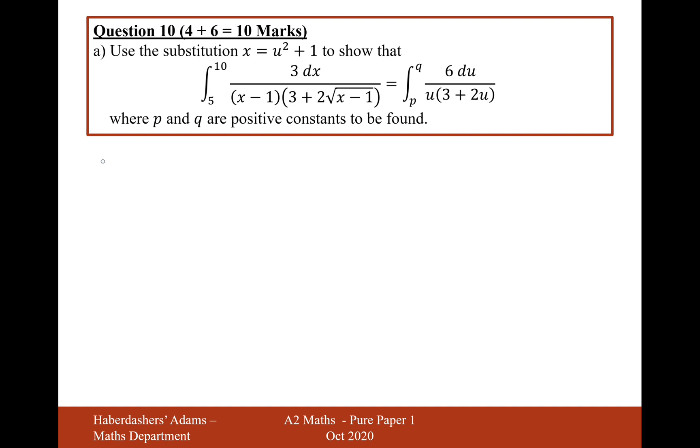So let's first work out what we do with this integral. Let's first do the boundaries. When x equals 5, we're going to have u squared plus 1 equals 5. So therefore u squared equals 4, so therefore u will equal 2. So the lower boundary p is equal to 2, so p equals 2.